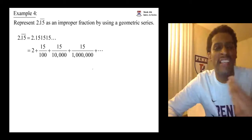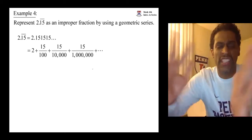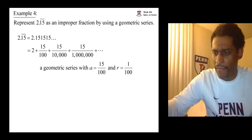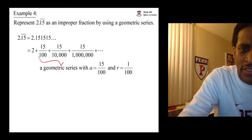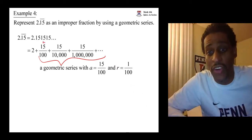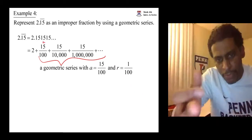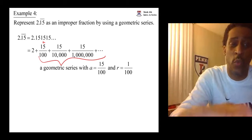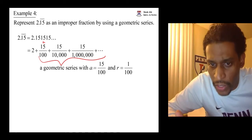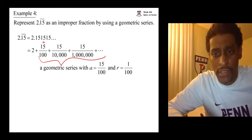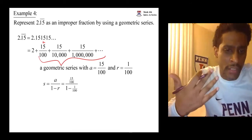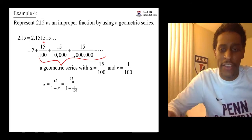The entire number isn't representative of a geometric series, but the decimal part is. So we can break off the two — the two is fine. We have a geometric series where the first term is fifteen over one hundred, and the ratio to get from term to term is one over one hundred. With a ratio of one over one hundred, that's less than one in absolute value, so it converges, and it converges to the sum a over one minus r — your first term over one minus your ratio.